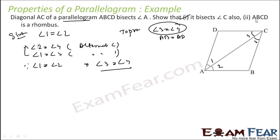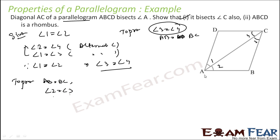Second part: we have to prove that AB is equal to AD. So to prove AB is equal to AD, I can also prove AB is equal to BC. We can prove angle 2 is equal to angle 3, then in triangle ABC, if angle 2 is equal to angle 3, AB will be equal to BC — that is the isosceles triangle.